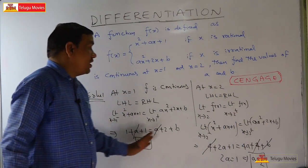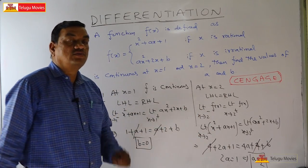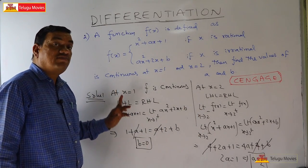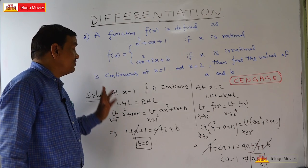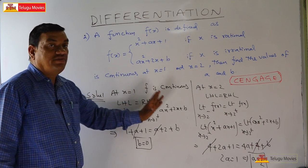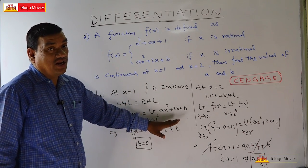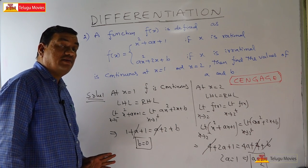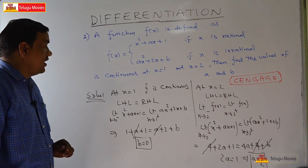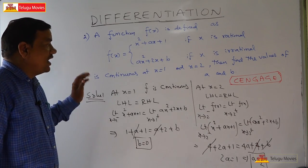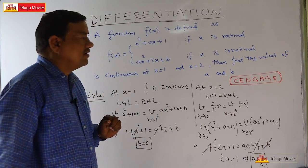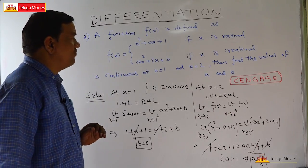Simplifying: 4 cancels on both sides, and since b=0, we get 2a+1 = 4a, which gives 1 = 2a, therefore a = 1/2. So the values are a = 1/2 and b = 0.